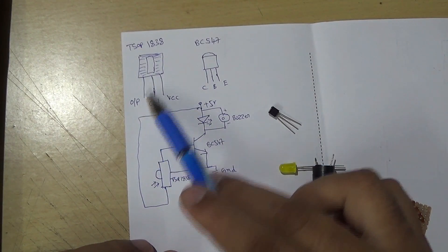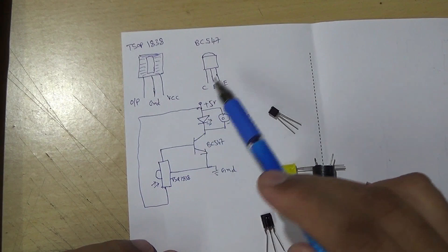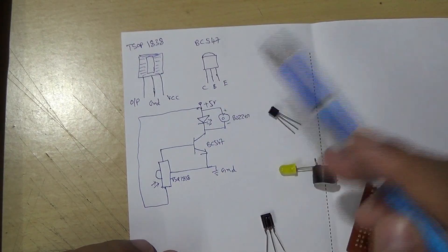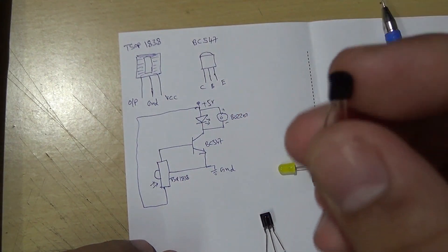This IR sensor is having three pins: VCC, ground, and the output pin. And BC547 transistor is having collector, emitter, and base.